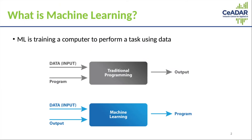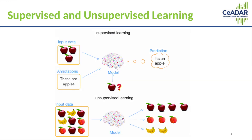I'll start by giving a brief recap of machine learning. Machine learning is the act of training a computer to perform some kind of complex task using large amounts of data. This is in contrast to traditional programming methods where your algorithm is explicitly programmed by someone. There are two main kinds of machine learning: supervised learning and unsupervised learning.